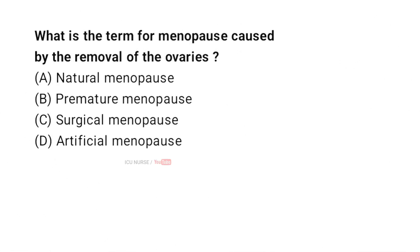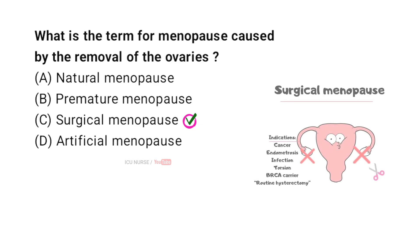What is the term for menopause caused by the removal of the ovaries? A. Natural menopause. B. Premature menopause. C. Surgical menopause. D. Artificial menopause. And the correct answer is C. Surgical menopause. Surgical menopause occurs when the ovaries are removed, usually due to medical conditions like cancer, leading to an immediate onset of menopause symptoms.